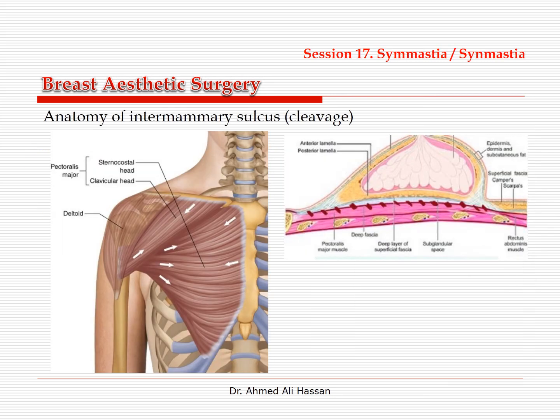To understand why symmastia occurs, we first have to understand the anatomy of the midline of the anterior thorax, or what is named the intermammary sulcus or cleavage. In other words, we have to understand why the skin is adherent to the sternum at the intermammary sulcus.